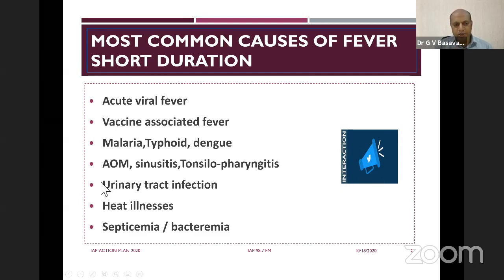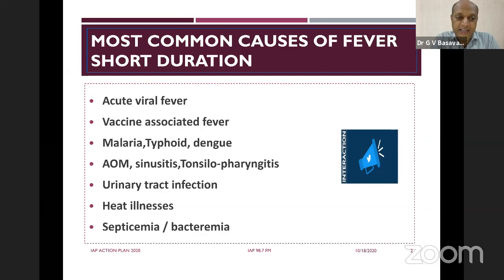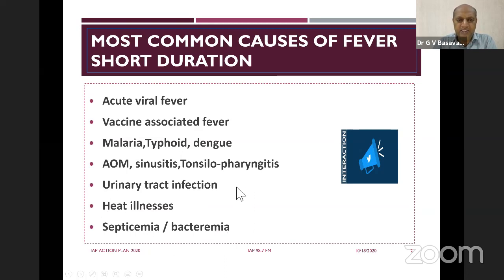Fever without localization — if fever is associated with excessive crying while passing urine, we need to consider urinary tract infection as a possible cause. Especially in the summer season, heat stroke and hyperpyrexia is possible. If you rule out all these things, one of the most important causes for fever of short duration is bacteremia and septicemia, which needs to be kept in mind.